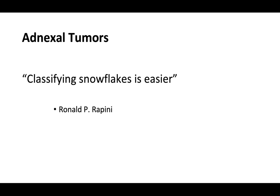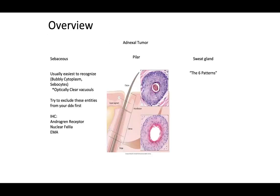Rupini was once thought to say classifying snowflakes is easier than classifying adnexal tumors. For overview, we have sebaceous, pilar, and sweat gland neoplasms. It's usually easiest to recognize sebaceous because you can identify the bubbly cytoplasm within sebocytes, and other poorly differentiated cells may have some sebocyte-type changes within the cytoplasm.